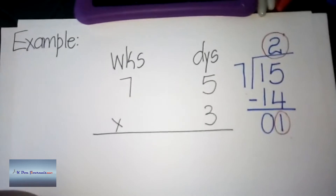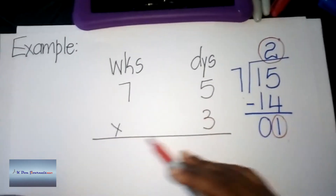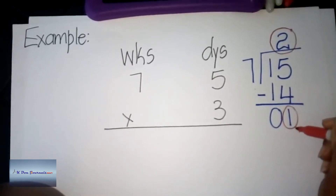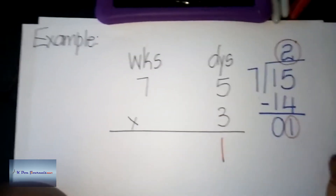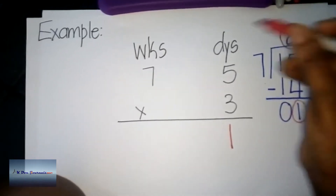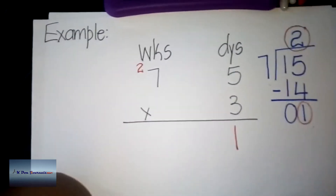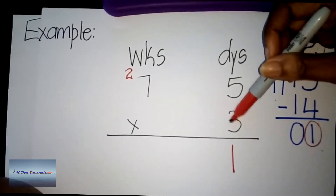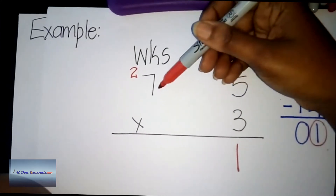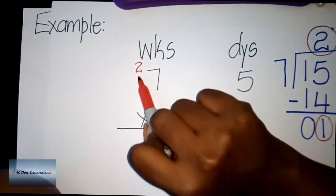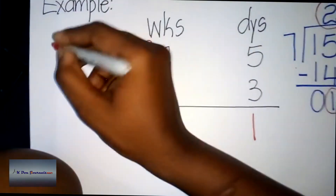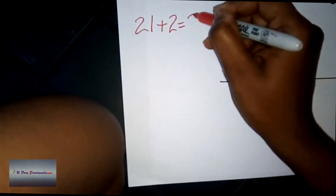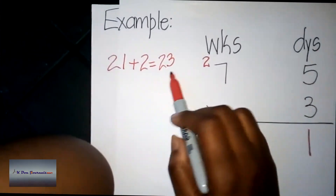We are going to take our two weeks and one day and transfer them — days go under days, weeks go under weeks. I put the one day at the bottom in the days column, and the two weeks in the weeks column. Now I multiply three and seven: three times seven gives us 21, then I add the two carried weeks to get 21 plus 2, which equals 23.